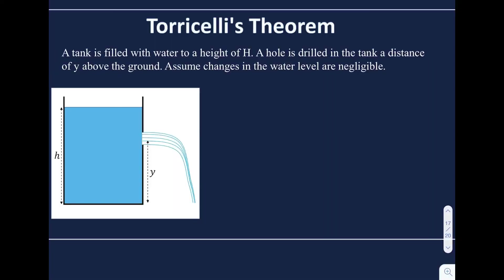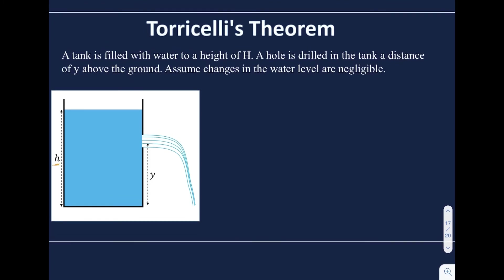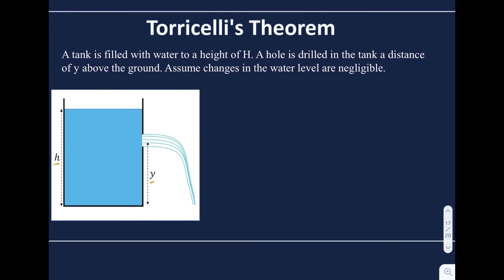Torricelli was another Italian who looked at how fast water comes out of a container if you have a hole in it, when it's filled to a certain height. It's a theorem because we're going to make an important assumption. This is a tank filled with water to a height of h, and there's a hole that is a distance of y above the bottom of the container. We're going to assume that changes in the water level are negligible. We're trying to find out how fast water leaves the hole — it leaves horizontally, and you can do projectile questions with this.